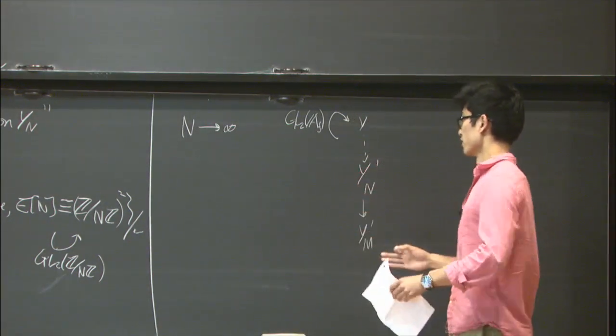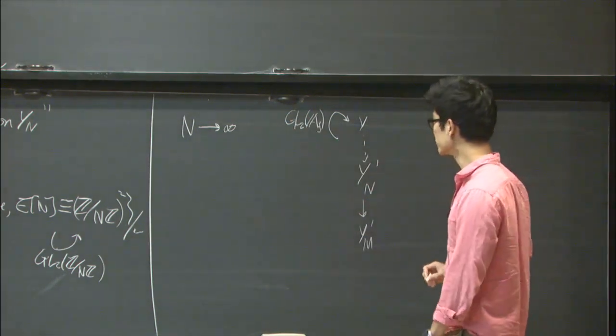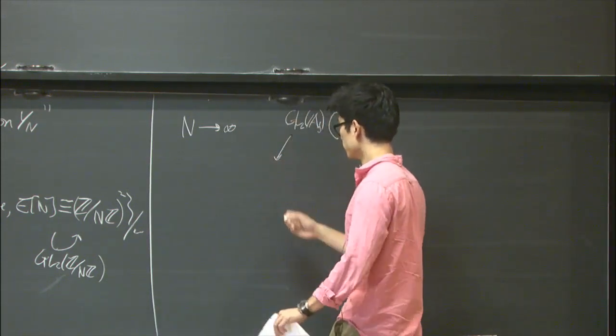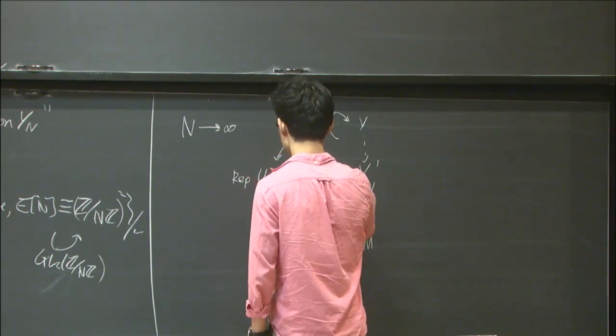In particular, this action already encodes all the information of Fourier coefficients of these modular forms. In general, using the theory of automorphic forms and automorphic representation, this object lives in the world of representation theory.